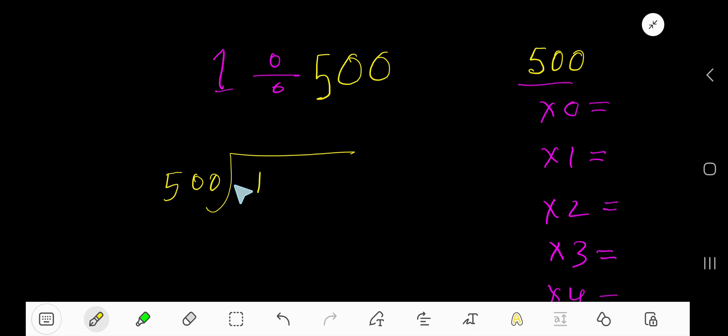So 0 times. 0 times 500 gives you 0. If you subtract, you get 1. Now to continue this process, take a decimal here, then you can take any number of zeros. Bring down the first zero.